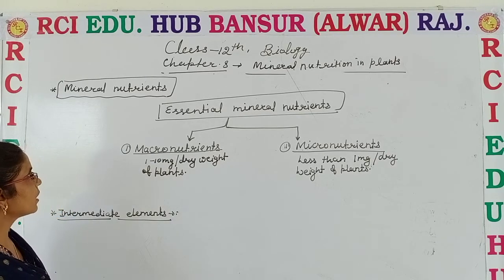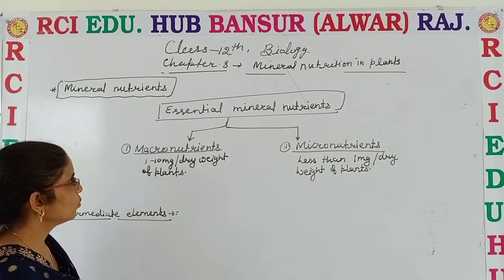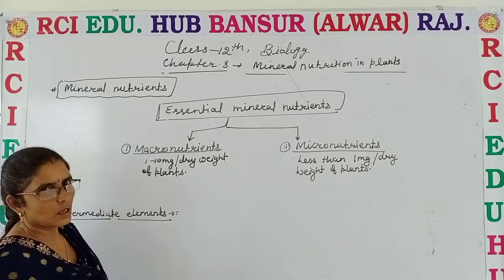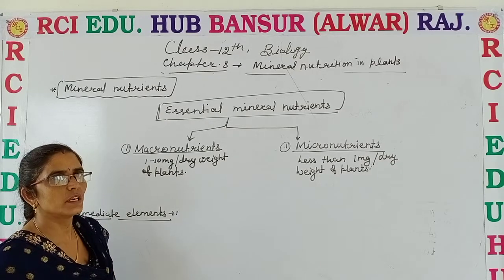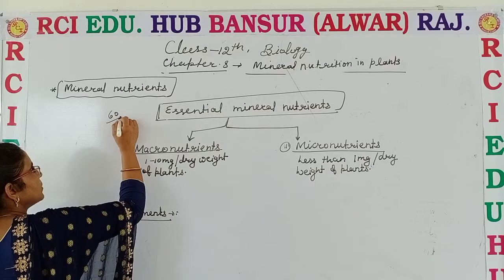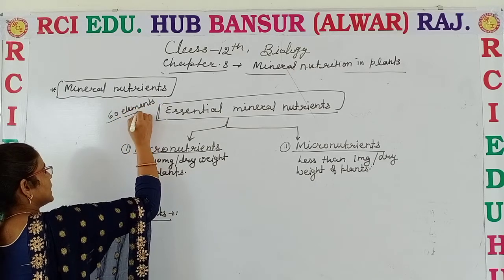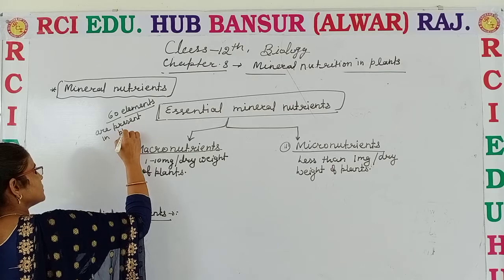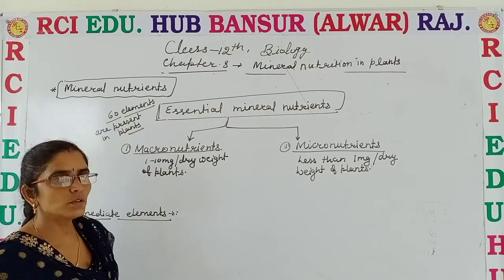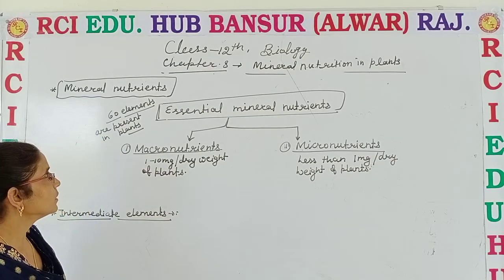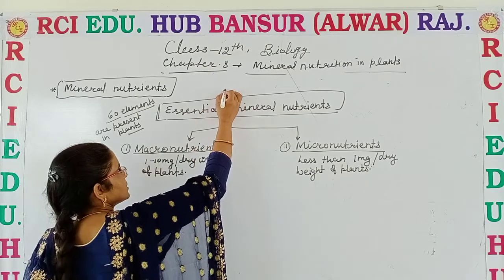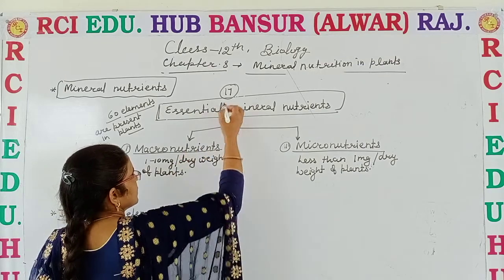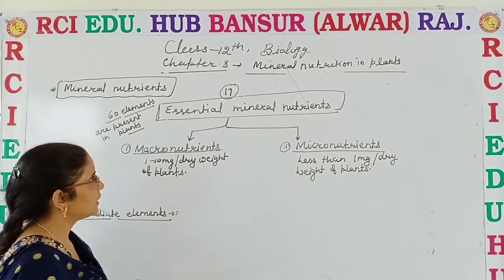So here we discuss about the mineral nutrients, and first we discuss about the essential mineral nutrients. Up to now, approximately 117 elements are known in nature. Out of that, about 60 elements are present in plants. According to studies, it was found that not 60 but 17 essential elements are there which are essential for the healthy growth of the plants.